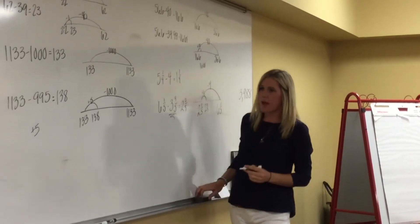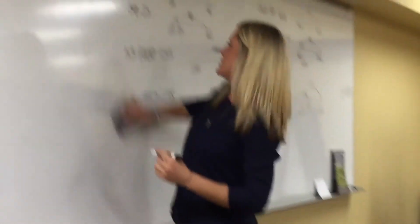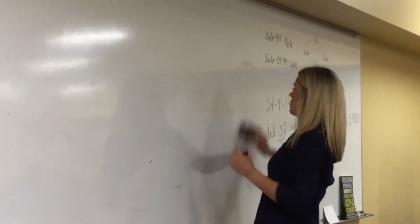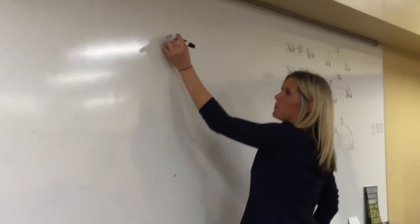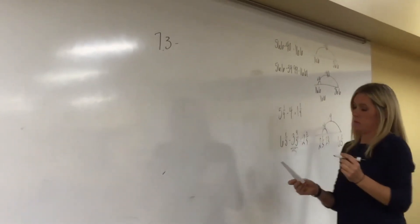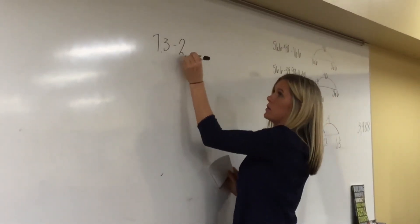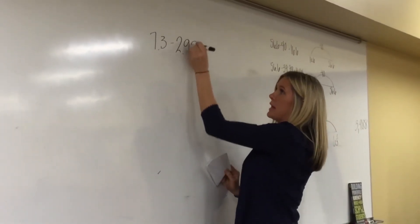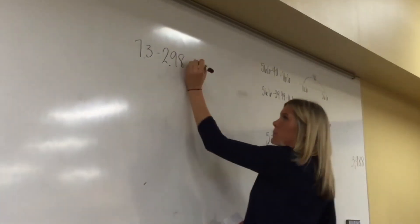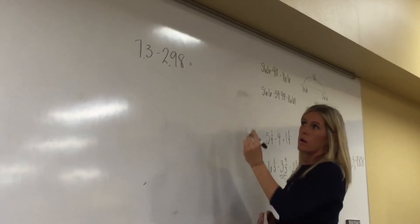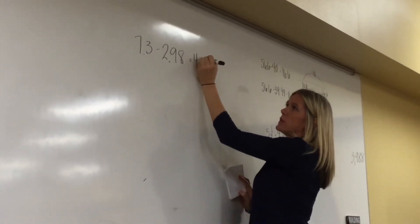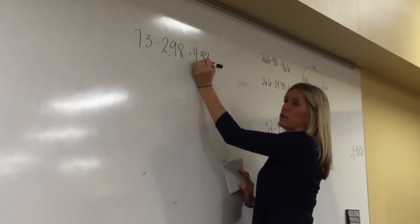Let me ask you another question: what if I asked you 7 and three tenths minus 2 and 98 hundredths? Kirby, what did you get? Four and thirty-two hundredths. Four and thirty-two hundredths — did anyone else get four and thirty-two hundredths?